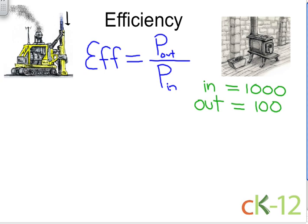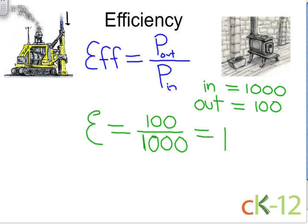Therefore, this wood-burning stove has an efficiency of, well, 100 divided by 1000, which equals 10 percent.